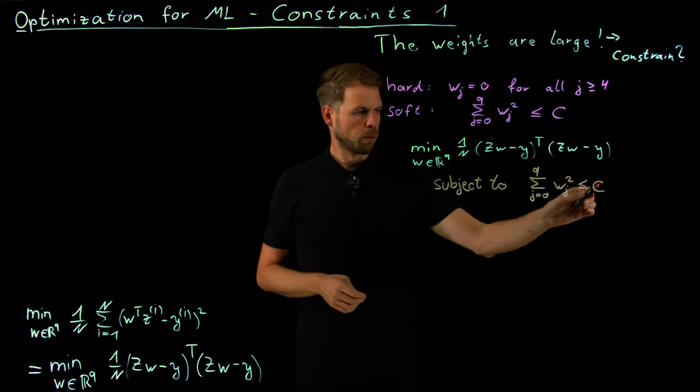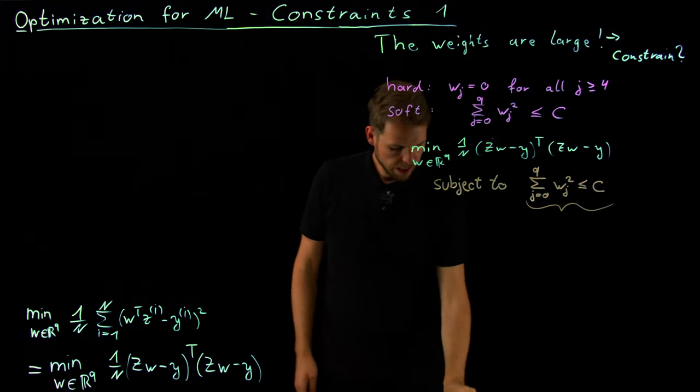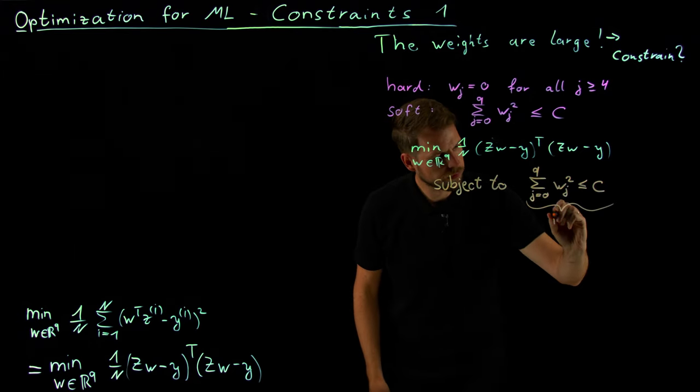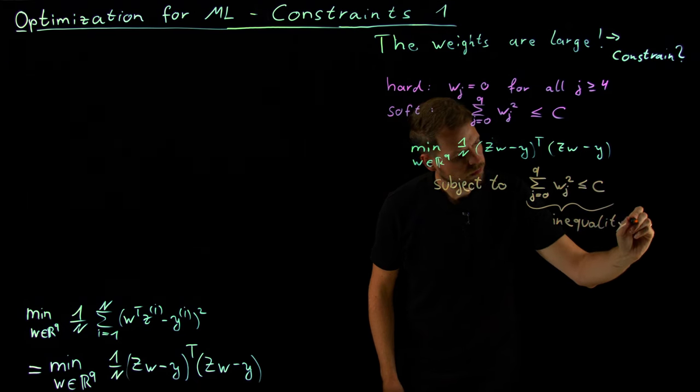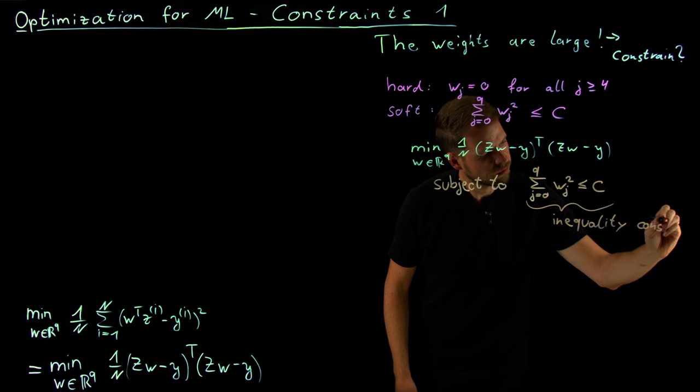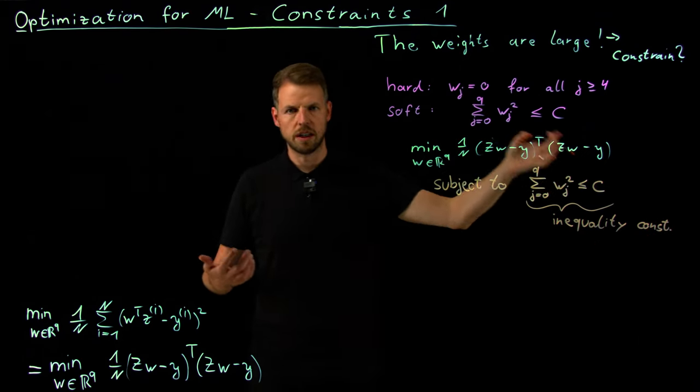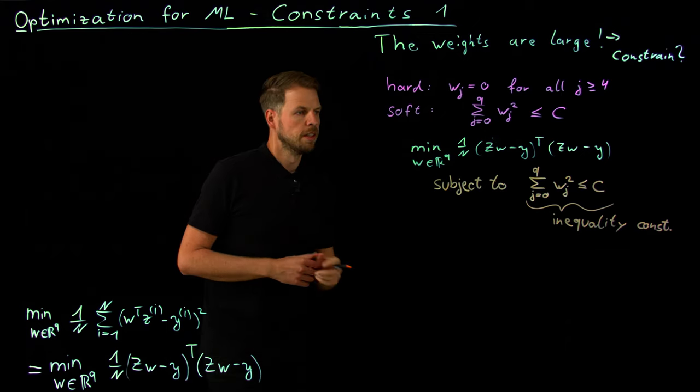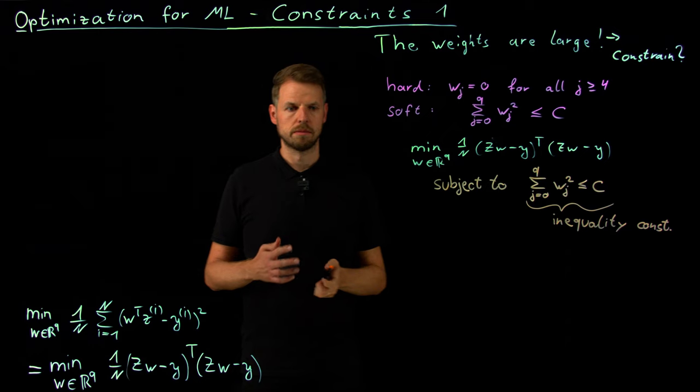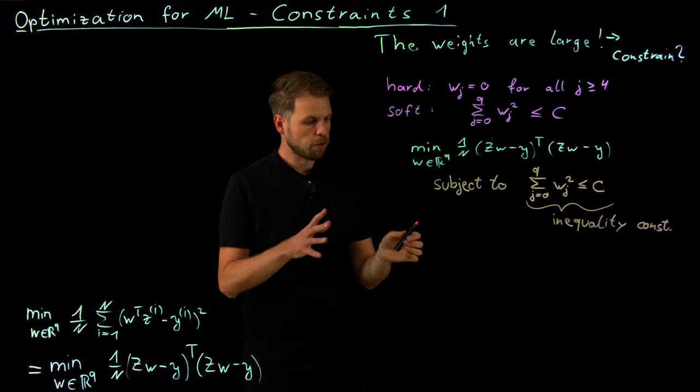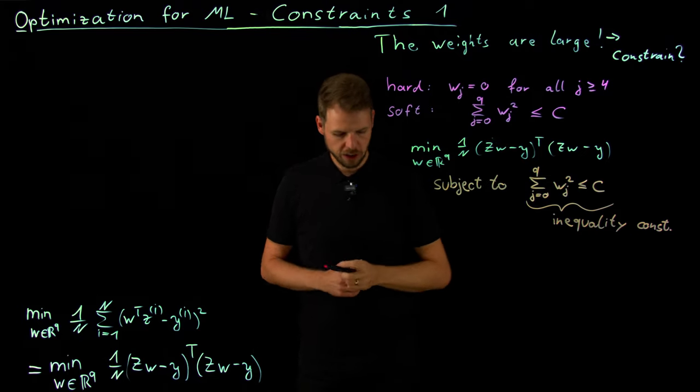And what we call this is an inequality constraint. Inequality because obviously we're saying this has to be less or equal to this weight. And so there's a second type of constraint which is, as you may guess, the equality constraint.